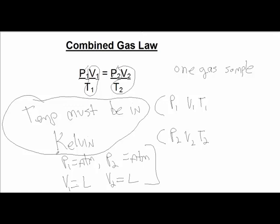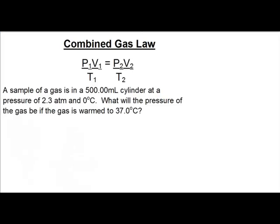I'd like to show you a couple of example problems. In this problem, a sample of gas in a 500 mL cylinder is at a pressure of 2.3 atm and 0 degrees C. What will the pressure of the gas be if the temperature is increased to 37 degrees C? So read that problem again carefully.